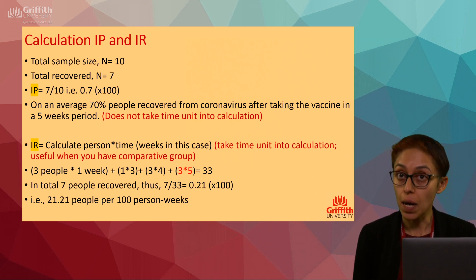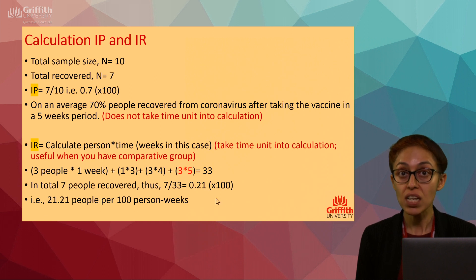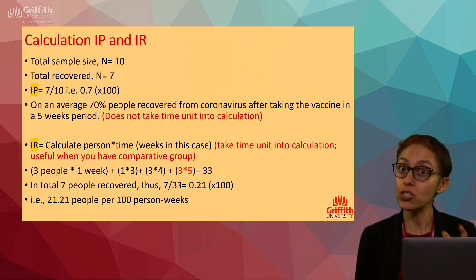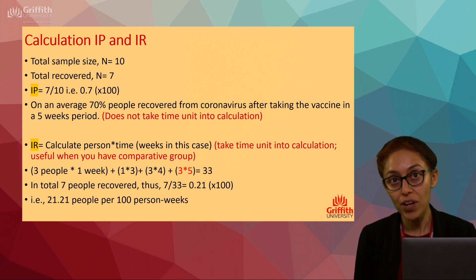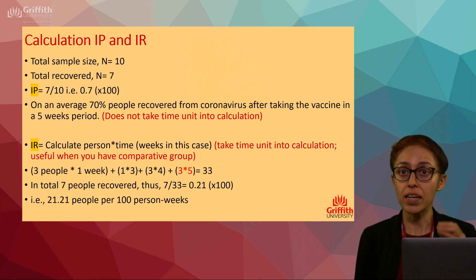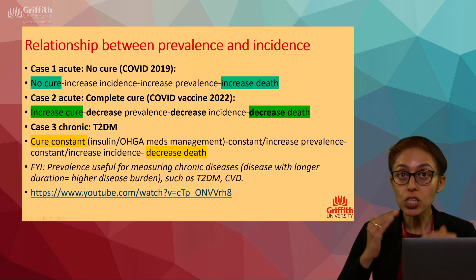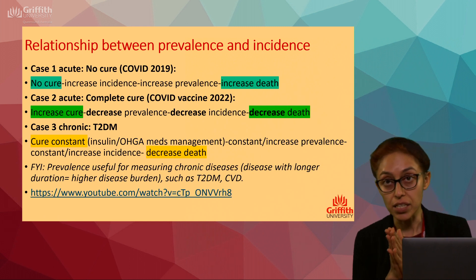The unit 'person-weeks' may seem unusual, but the more you engage with epidemiological datasets and governmental reports, the more you'll see data reported this way. It's your introduction to the terminology of epidemiology. The calculation itself is straightforward, and the distinction between incidence proportion and incidence rate should now be clear.